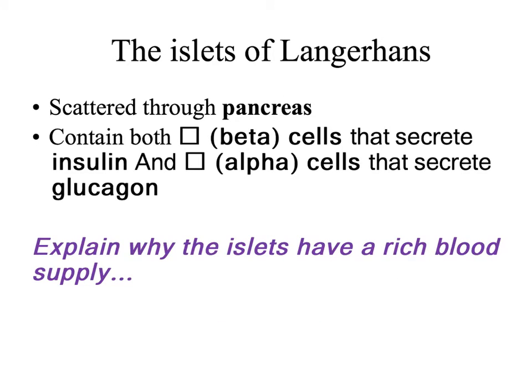Blood glucose levels are controlled by two different hormones. These hormones are secreted by particular sections of the pancreas called the islets of Langerhans. These are collections of cells that are scattered throughout the pancreas. Inside the islet, we have two types of cells: beta cells that secrete insulin, which is a hormone, and alpha cells that secrete glucagon. These hormones work together to regulate blood glucose levels.